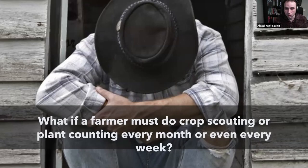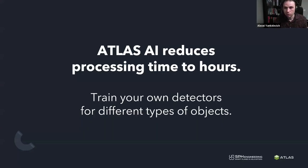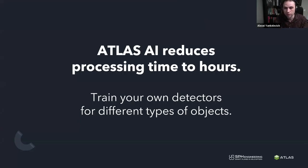We have several challenges and of course we want to use some automation. Our software Atlas can reduce the amount of time required for processing — we can reduce it from days to hours. That is what we see on different examples from our clients, and we have some public cases on our website you can inspect separately. With Atlas you can automate certain things: you can train your own detectors that will find objects on the map for you and make automatic annotations for you.